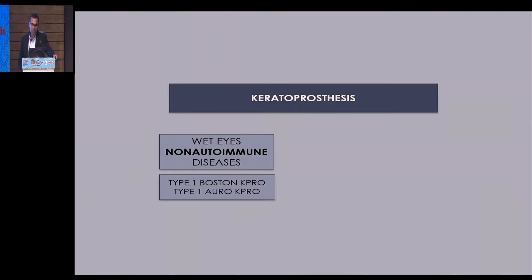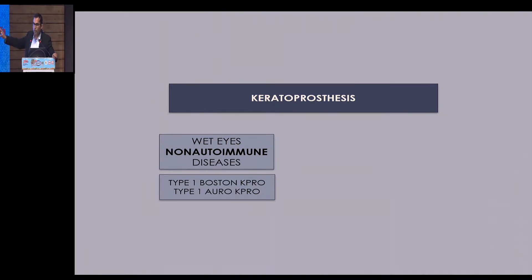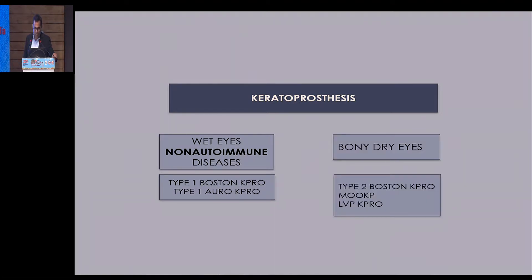Coming to keratoprosthesis — wet eyes and non-autoimmune diseases are candidates for Type 1 keratoprosthesis. Type 1 K-Pro is not suitable for bony dry eyes and autoimmune cases like Stevens-Johnson syndrome. In SJS when the eye seems wet, it is likely to melt. For bony dry eyes, we have a completely different set of K-Pros: Type 2 Boston K-Pro, MOOKP, and LVP K-Pro.